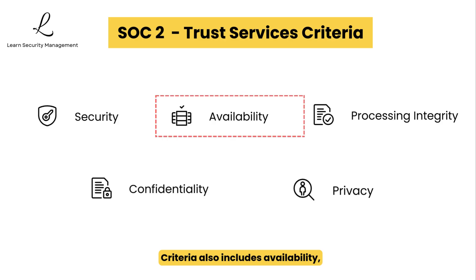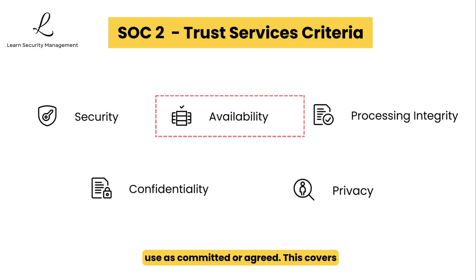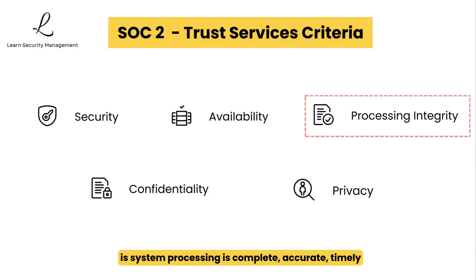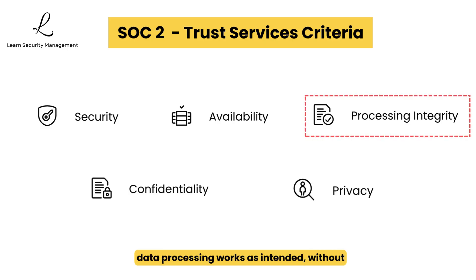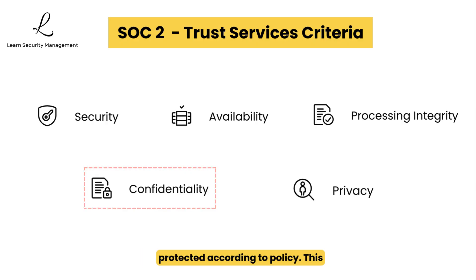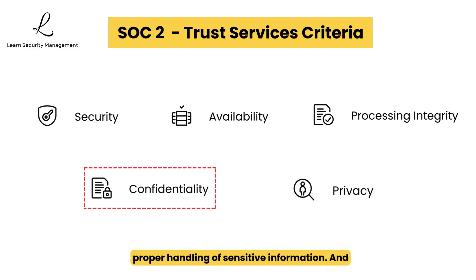The trust services criteria also includes availability — system availability for operation and use as committed or agreed — covering disaster recovery, backup systems, monitoring, and how the organization handles outages. Another criterion is processing integrity: system processing is complete, accurate, timely, and authorized, ensuring data processing works as intended without errors, manipulation, or delays. Another criterion is confidentiality — information designated as confidential is protected according to policy — which includes encryption, data classification, and proper handling of sensitive information.